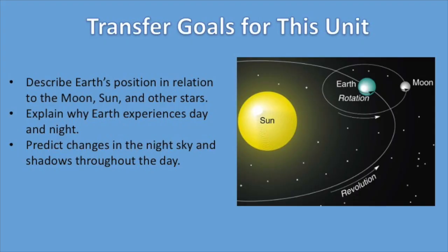When you go to the Atlas site, Unit 2, you'll see that there are transfer goals and that these include: describe Earth's position in relation to the moon, sun, and stars; explain why the Earth experiences day and night; and predict changes in the night sky and shadows throughout the day.